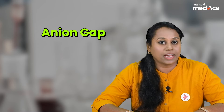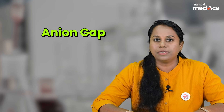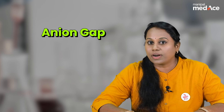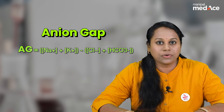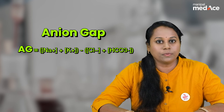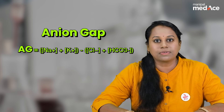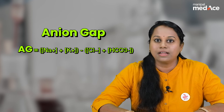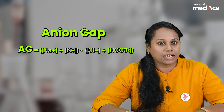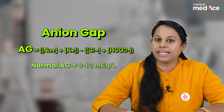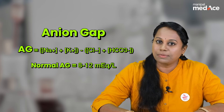So, how would you calculate this anion gap? Simple — you take chloride and bicarbonate to the other side. So, anion gap is equal to sodium plus potassium minus chloride plus bicarbonate. The normal value of anion gap is 8 to 12 milliequivalents per liter. This is how easily we can calculate anion gap.